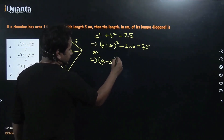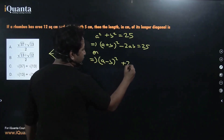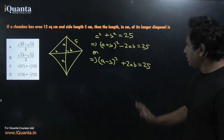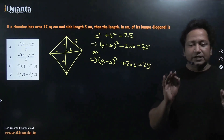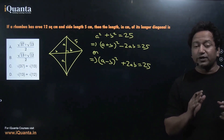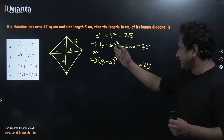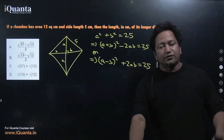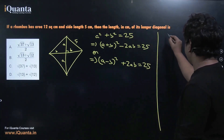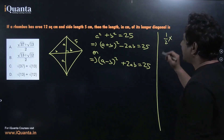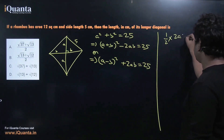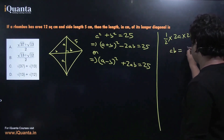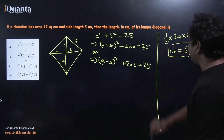Now we need the value of either (a + b) or ab, which we can find using the formula for the area of a rhombus. The area of a rhombus is given by half times the product of its diagonals, which is 2a and 2b in our case. This equals 12 as given, so solving we get ab = 6.